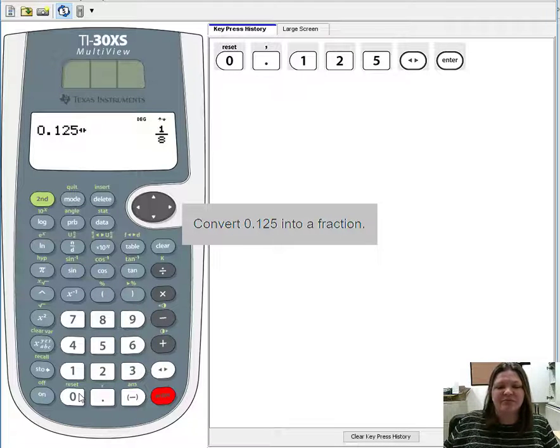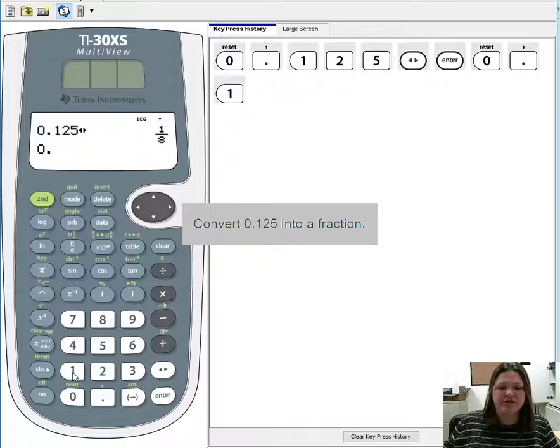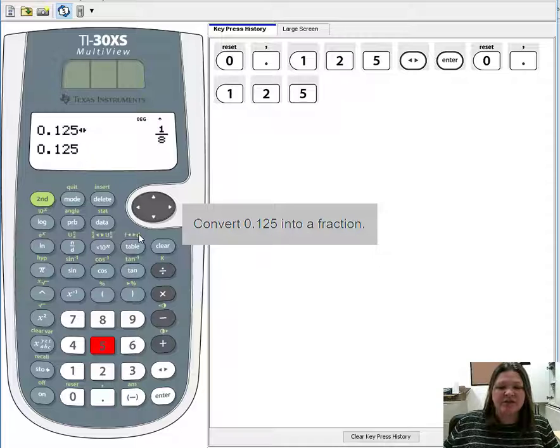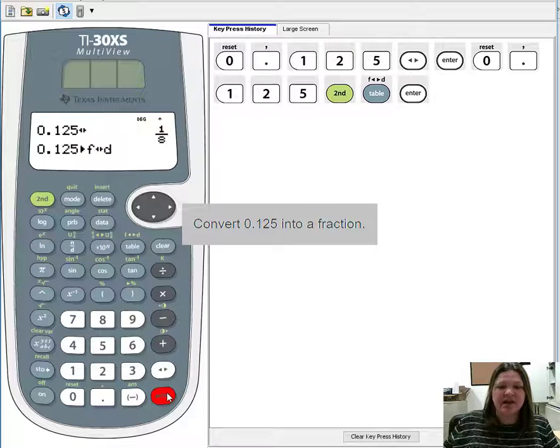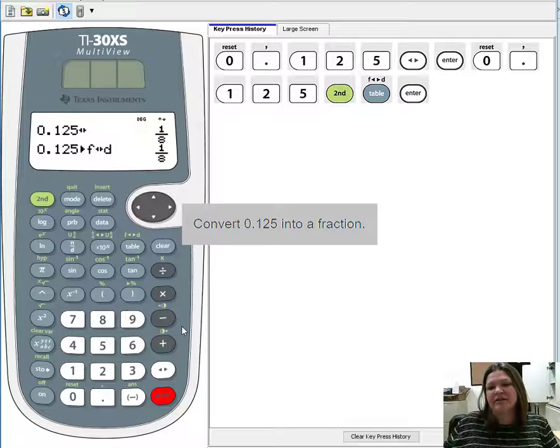It knew that I needed a fraction. But you could have also had 0.125 in here and use the button that I know would work, which is the fraction to decimal convert right above table. So second, fraction to decimal, enter, and we still see it's 1/8. Next problem.